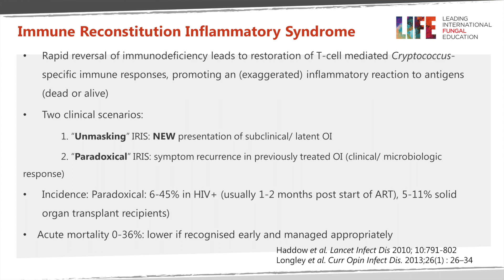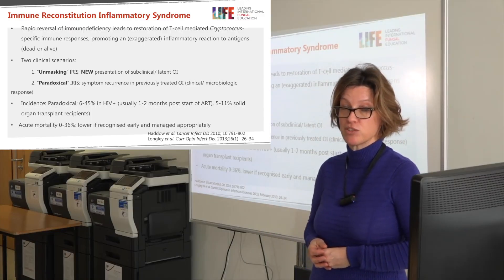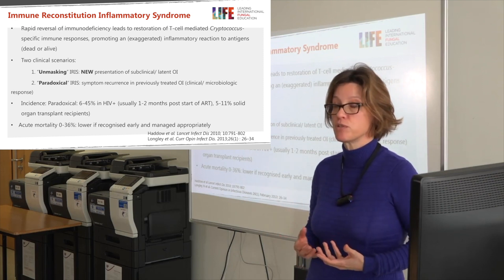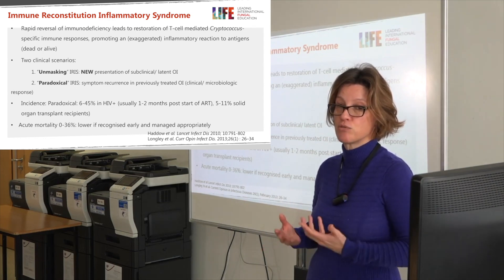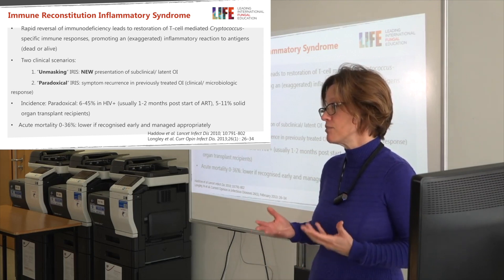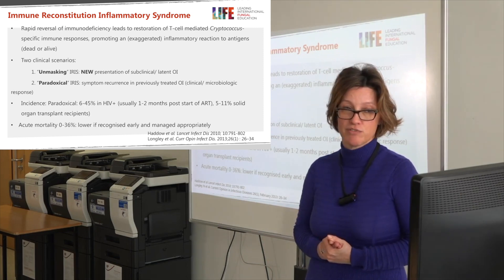This can lead to two clinical scenarios. The first is unmasking IRIS: the infection, which can be either subclinical or latent in patients with advanced HIV, is unmasked by restoration of the inflammatory response to a pathogen that has so far been dormant in the body. Symptoms — usually headache or other symptoms of meningitis — develop, and it presents with positive cultures. The second scenario is paradoxical IRIS, in patients previously treated for cryptococcal meningitis showing clinical resolution and response to therapy, yet symptoms recur usually a few months after starting antiretroviral therapy.